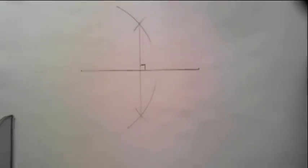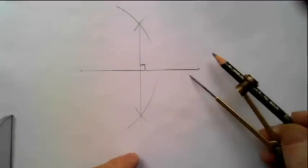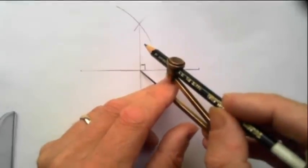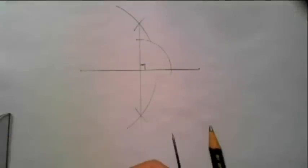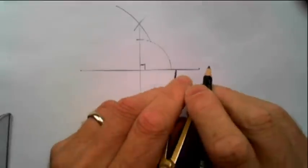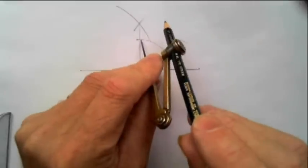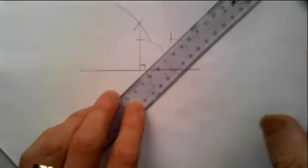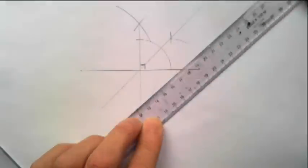Now let's consider dividing an angle in half. All you have to do is whatever angle it is, I've got a 90 degree angle here, so I might as well use that. Simply make a mark on each of the arms, compass point there, strike an arc, compass point there, strike an arc, and now you have a 45 degree angle when you connect it to the middle.